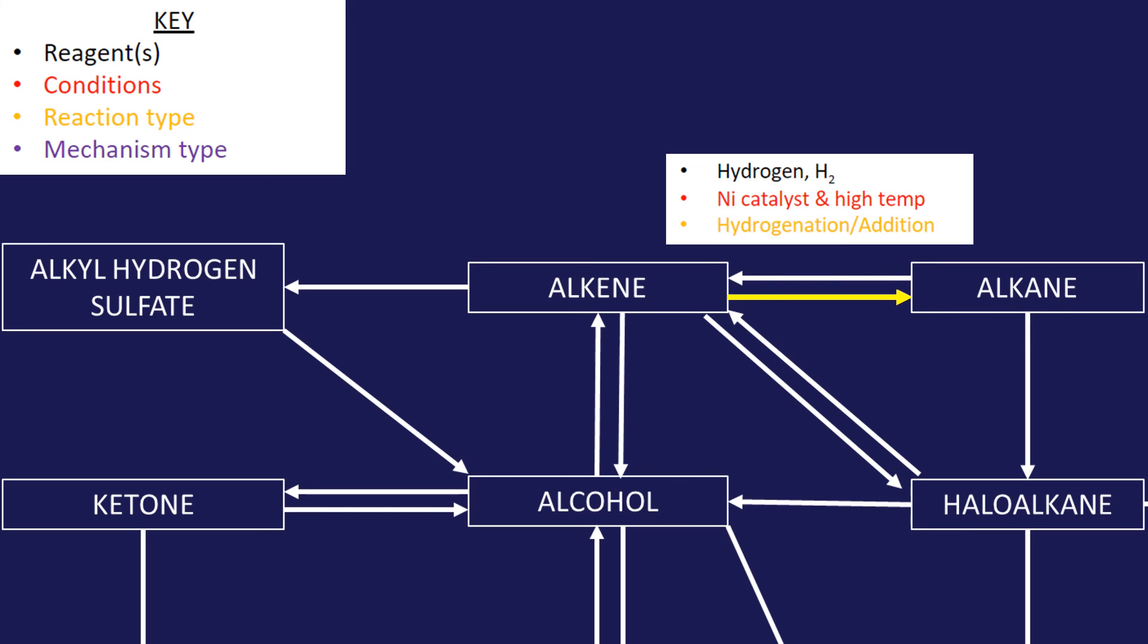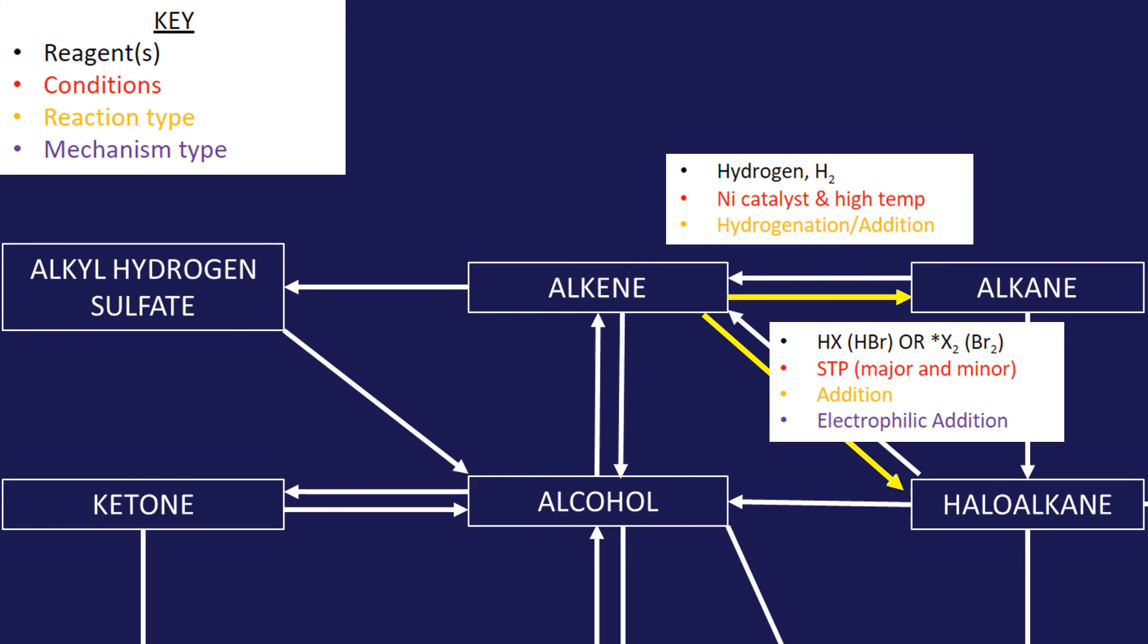The first one we looked at then was this one here. It was an alkene to a haloalkane. You can use HX to make your haloalkane, or if you used X2, you'd get a dihaloalkane. And that was our test for the alkene. You can add bromine water which is orange brown and it will decolorize. Be careful with your major and your minor products if you're using HX. That's called an addition reaction and the mechanism is electrophilic addition.